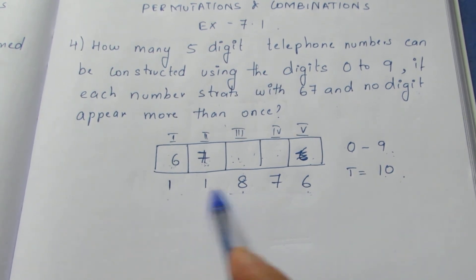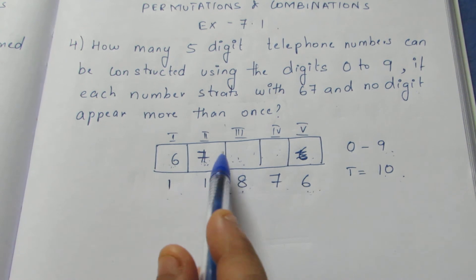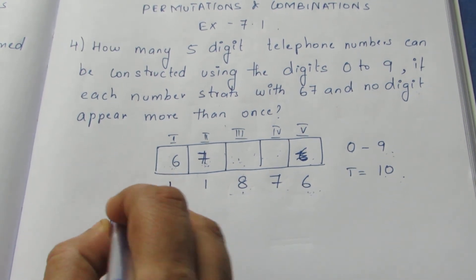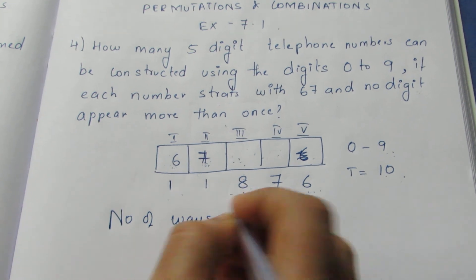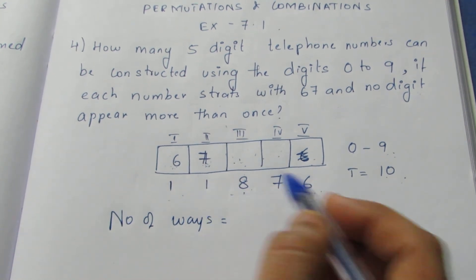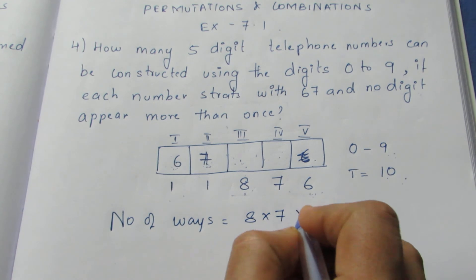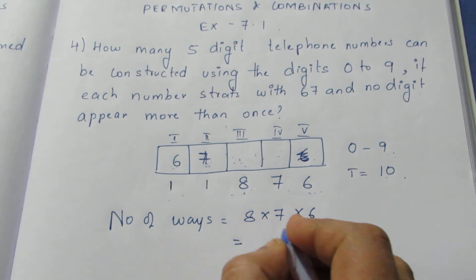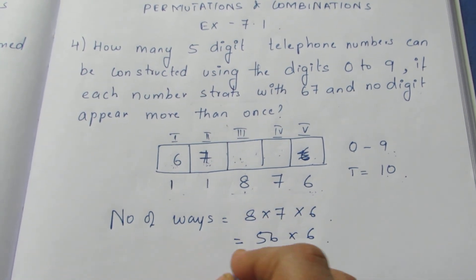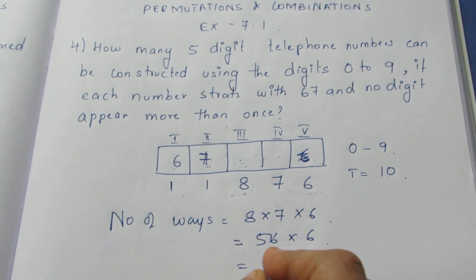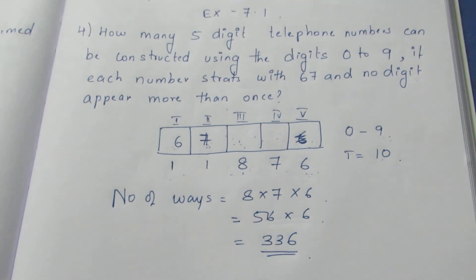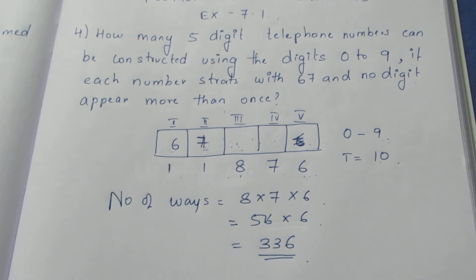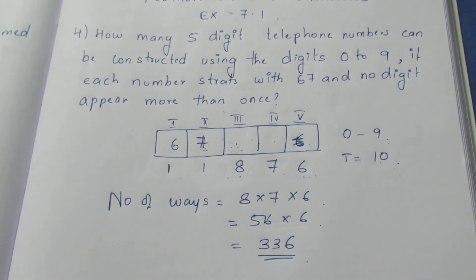These are the ways we can fill each box. The total number of ways will be found by multiplying all these numbers: 1 × 1 × 8 × 7 × 6. Since 1 × 1 = 1, we get 8 × 7 × 6 = 56 × 6 = 336. So the total number of 5-digit telephone numbers that can be constructed from 0 to 9 starting with 67 with no repetition is 336.